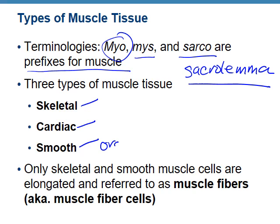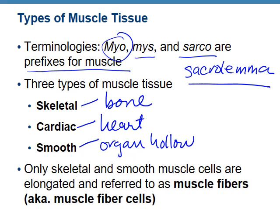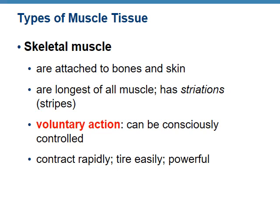There are three types we should know by now: skeletal, cardiac, and smooth. Remember smooth is organs, specifically hollow organs. Cardiac is the heart, and skeletal is attached to bone. Only skeletal and smooth muscles are elongated and referred to as muscle fibers, or muscle fiber cells. It is a cell, but it has long fibers inside, and those fibers are made up of proteins.